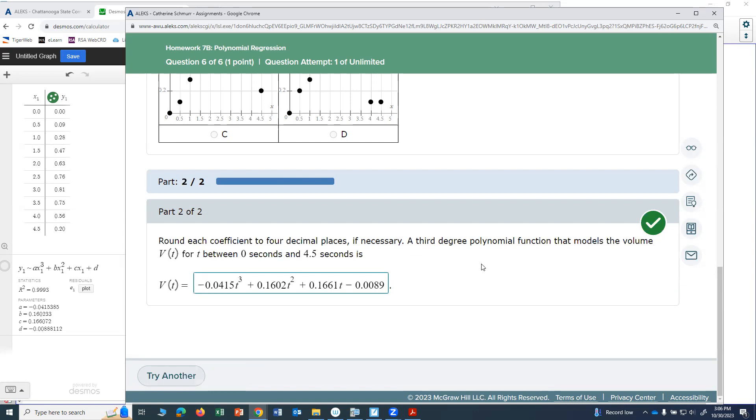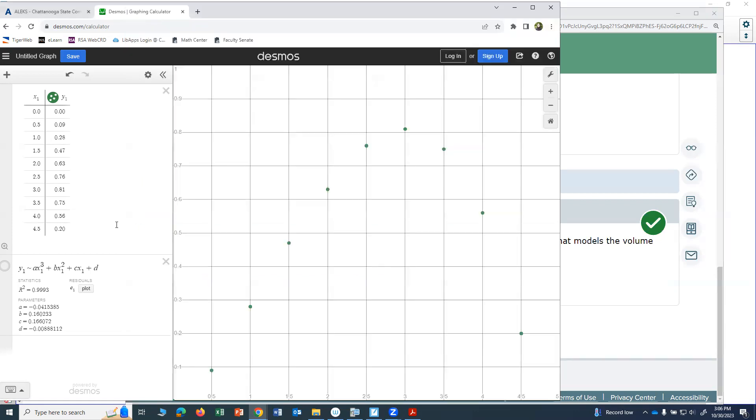So that's how you do a cubic in Desmos. Remember to get your graph, you adjust your window using this wrench. If you want the graph of the function, make sure that circle next to it is filled in. If you don't, click it and it will get rid of the graph.